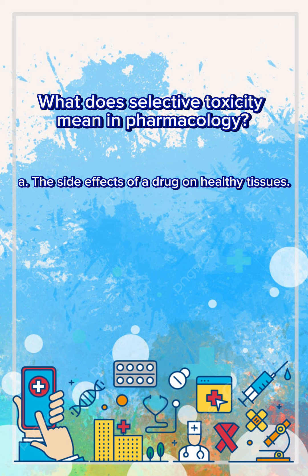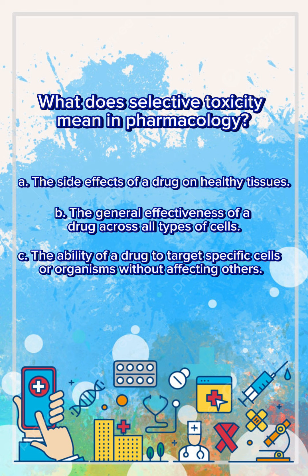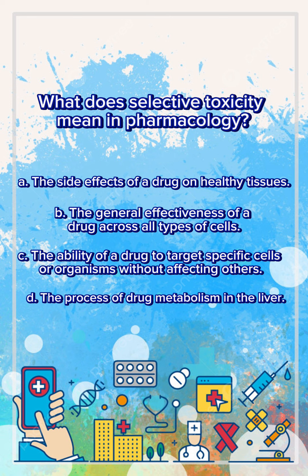A. The side effects of a drug on healthy tissues. B. The general effectiveness of a drug across all types of cells. C. The ability of a drug to target specific cells or organisms without affecting others. D. The process of drug metabolism in the liver.